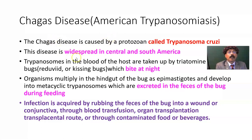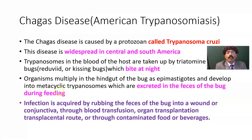Trypanosomes in the blood of the host are taken up by the triatomine bugs — that is the reduviid or kissing bugs — which bite at night. In the daytime they hide in the cracks of the wall or in the roof of the hut, then at nighttime they come out. Organisms multiply in the hindgut of the bug as epimastigotes and develop into metacyclic trypanosomes, which are excreted in the feces of the bug during feeding.